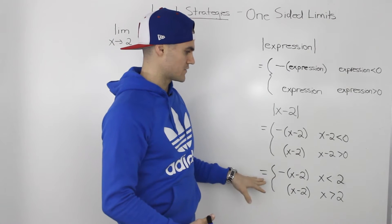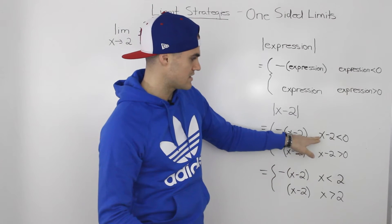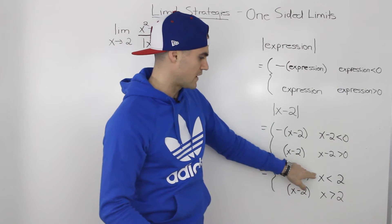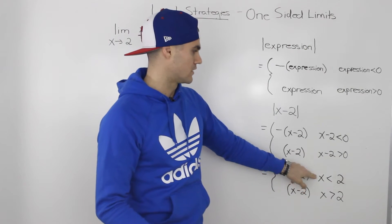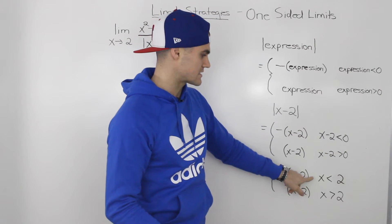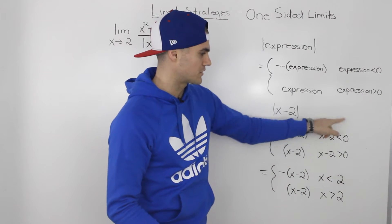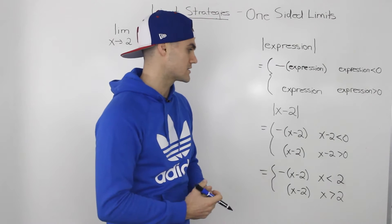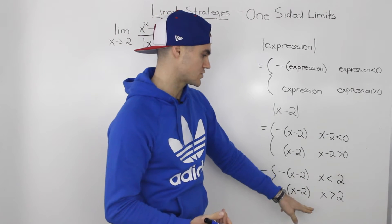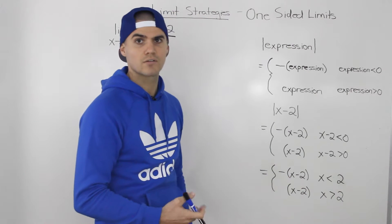Simplifying this piecewise function further, x minus two less than zero is the same as x less than two — bringing the negative two over changes the sign. Similarly, x minus two greater than zero becomes x greater than two. So our simplified piecewise gives us negative (x minus two) when x is less than two, and (x minus two) when x is greater than two.